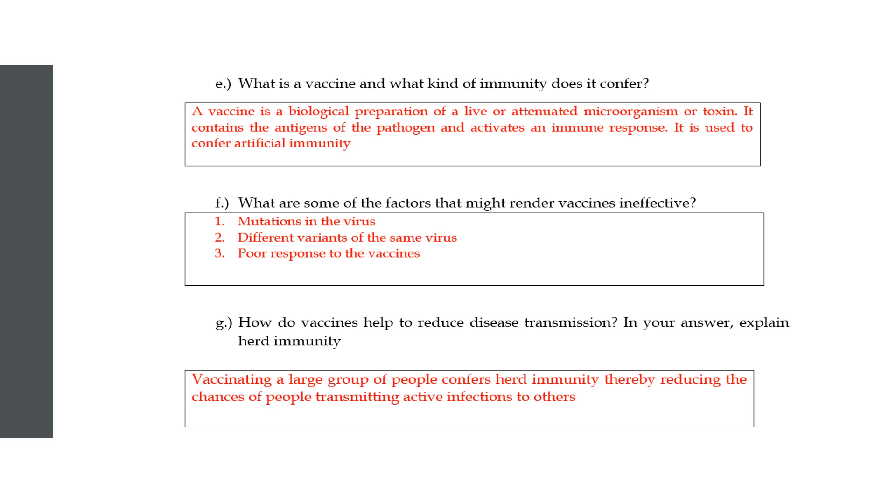Now for the last bit: what is a vaccine? This can be quite difficult to define, but I imagine that now that COVID has happened, you're probably getting this question a lot in the exams. A vaccine is like a biological preparation of a live or attenuated microorganism or toxin, and it contains the antigens of the toxin. When it's injected into the body, the body recognizes this as a toxin, stimulates a primary response, and from then on, whenever you're exposed to it, there's a secondary response that ensures you don't get sick or don't get sick as much.